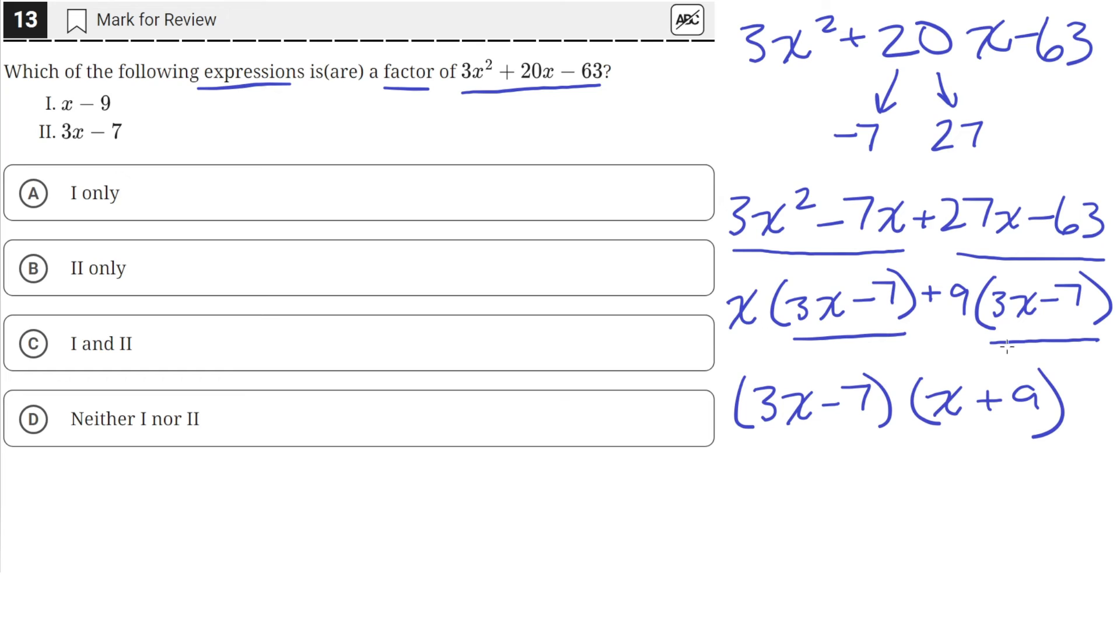So multiplying this back out would get us back to this. But now we have a fully factored out quadratic. And we can see whether these two are really its factors.